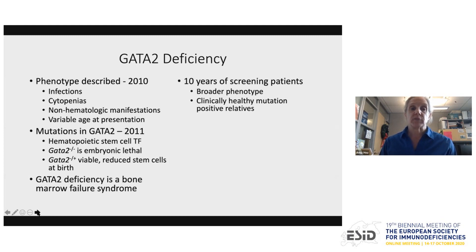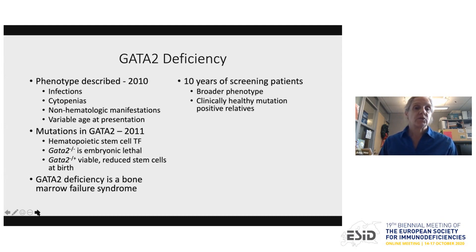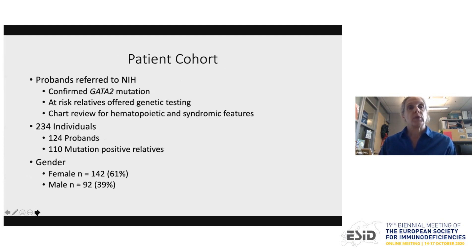Homozygous knockout mice are embryonic lethal at day 10; however, heterozygous knockout mice are viable but have reduced stem cells at birth, roughly 50% of wild-type litter mates. GATA2 deficiency is one of the bone marrow failure syndromes. Ten years of screening has provided a broader phenotype and clinically healthy mutation-positive relatives. Our cohort consists of 234 individuals — 124 probands and 110 mutation-positive relatives — referred to NIH for genetic diagnostics or clinical management. Gender split is about 60-40 female to male.